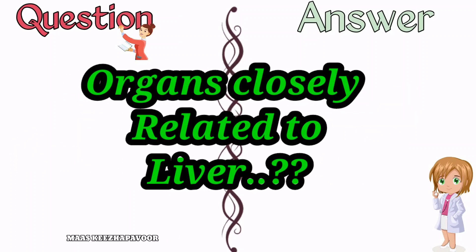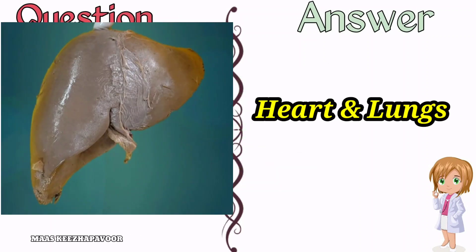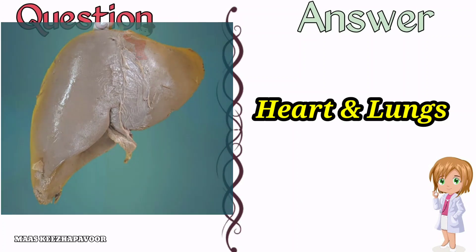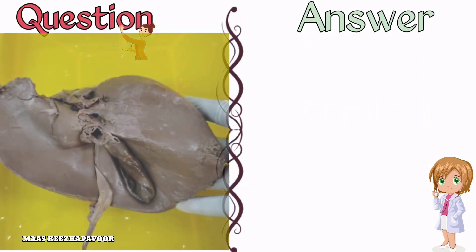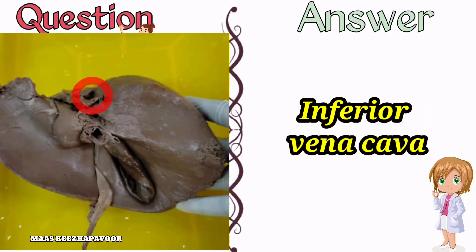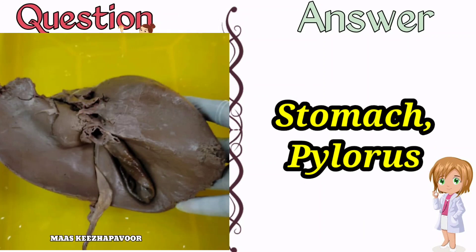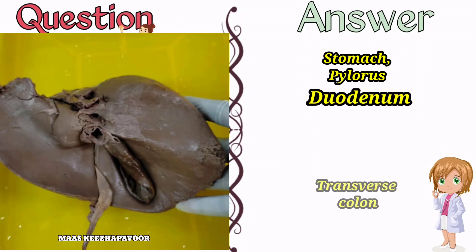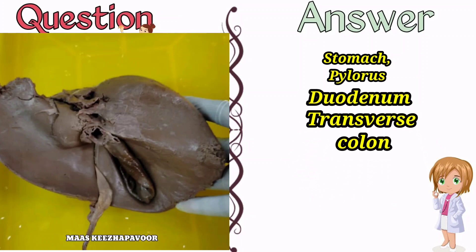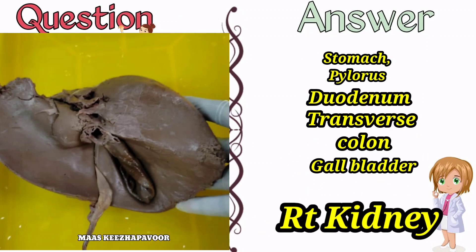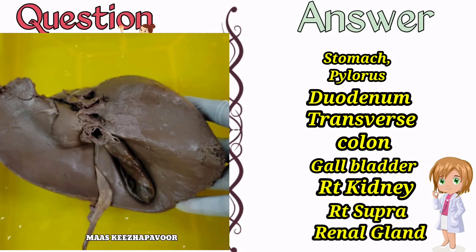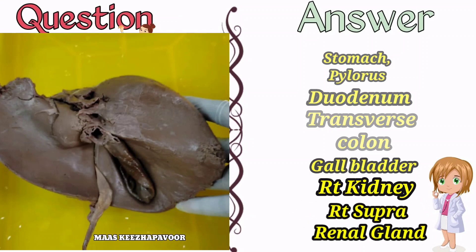Name some organs closely related to the liver. The heart and lungs are related to the superior surface, separated from the liver by the diaphragm. The inferior vena cava is related to the posterior surface. The stomach, pylorus, duodenum, transverse colon, gallbladder, right kidney, and right suprarenal gland are related to the inferior surface.